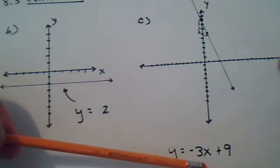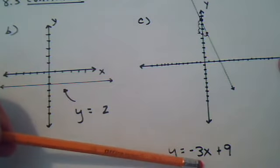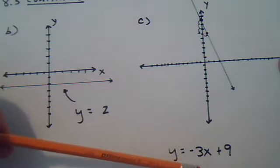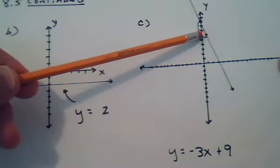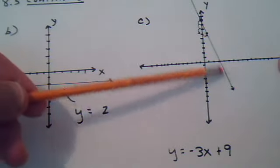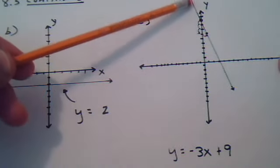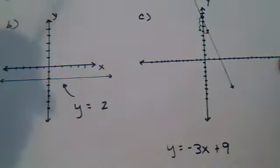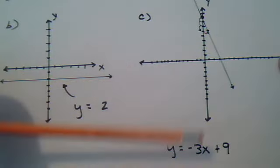Then the x part of the slope, rise over run, is a 1. Positive 1. So from here move to the right 1 unit. So that's your second point. Now join those two points. And here's your line. So here's the line and here's its equation.